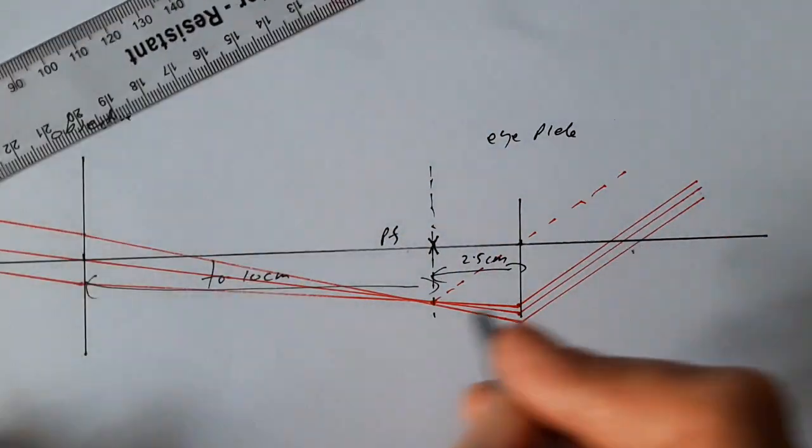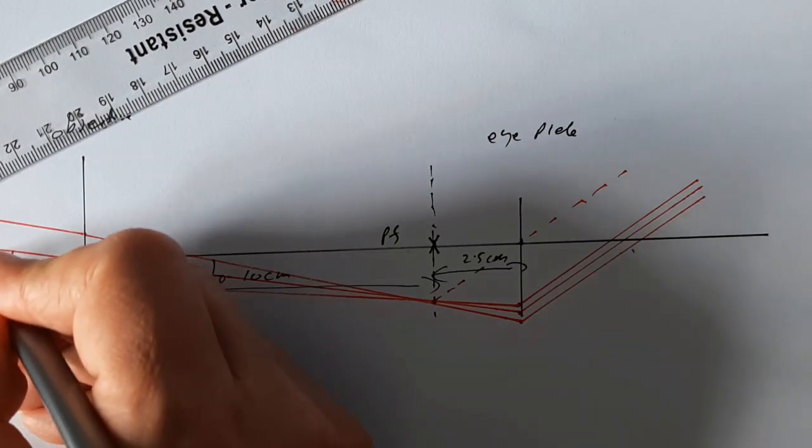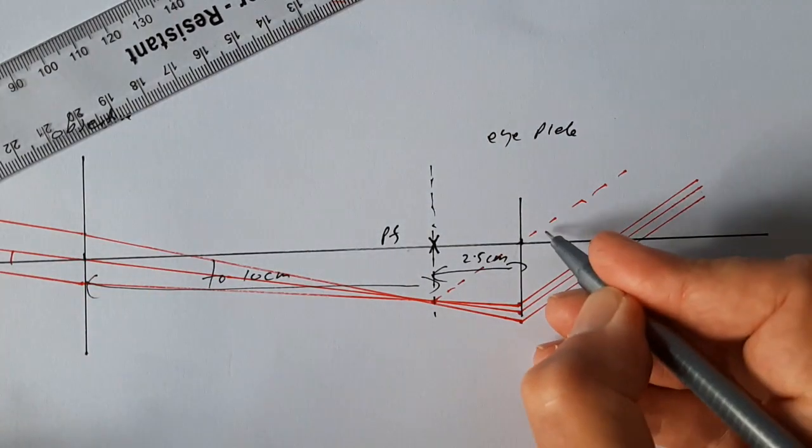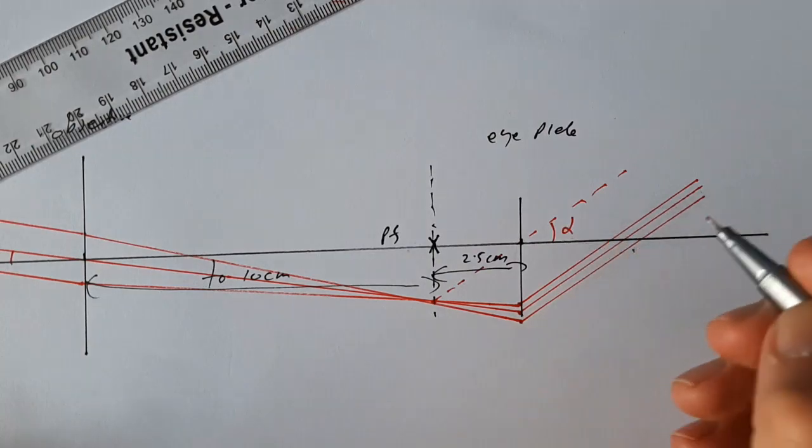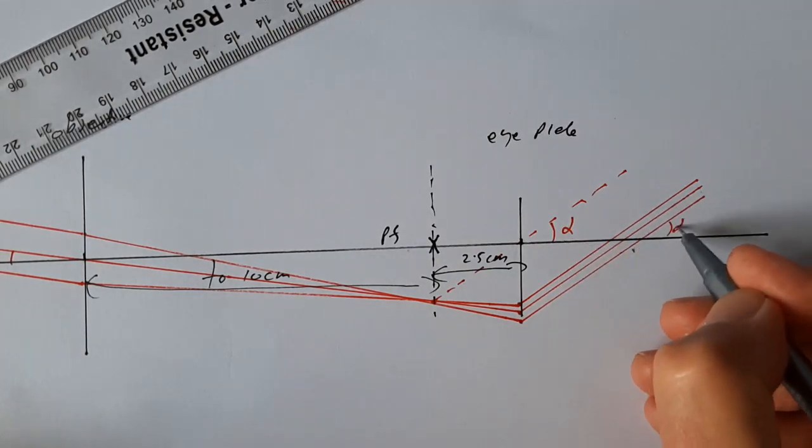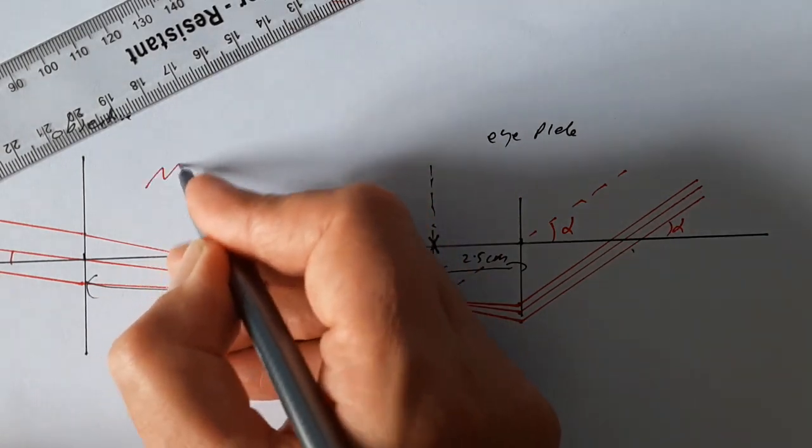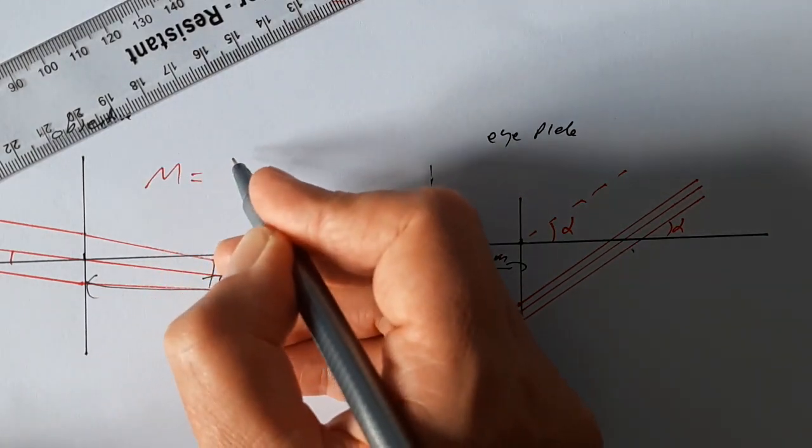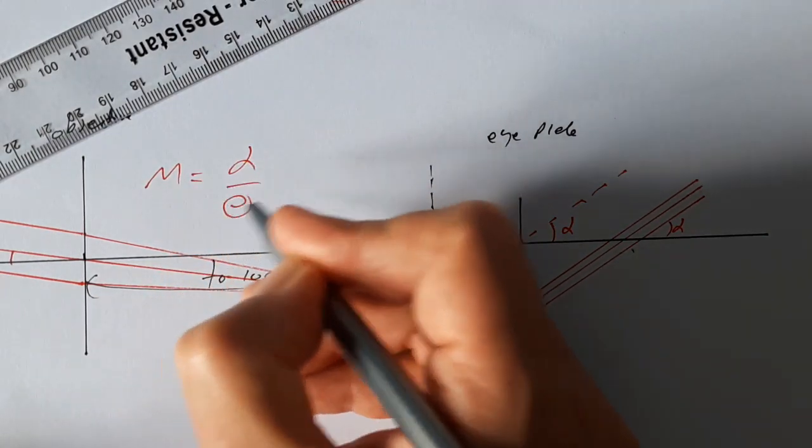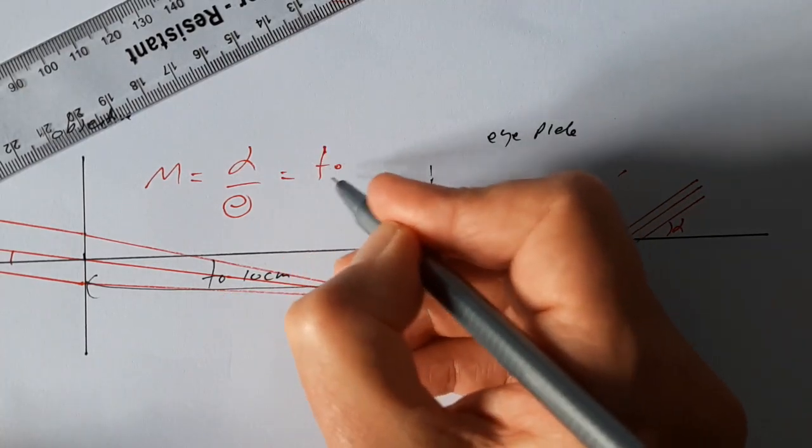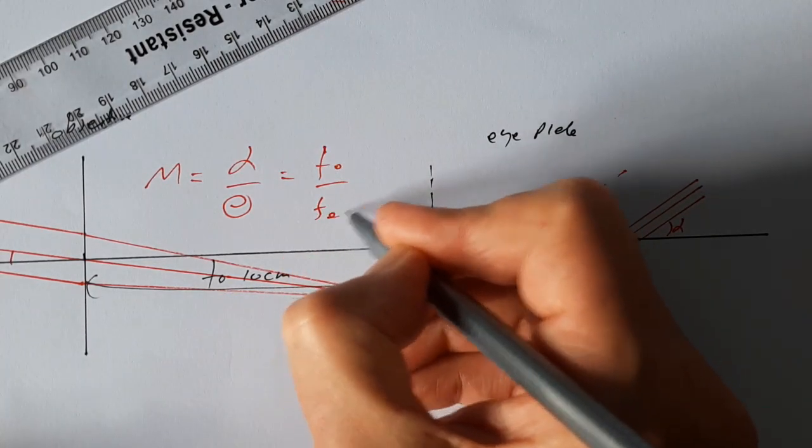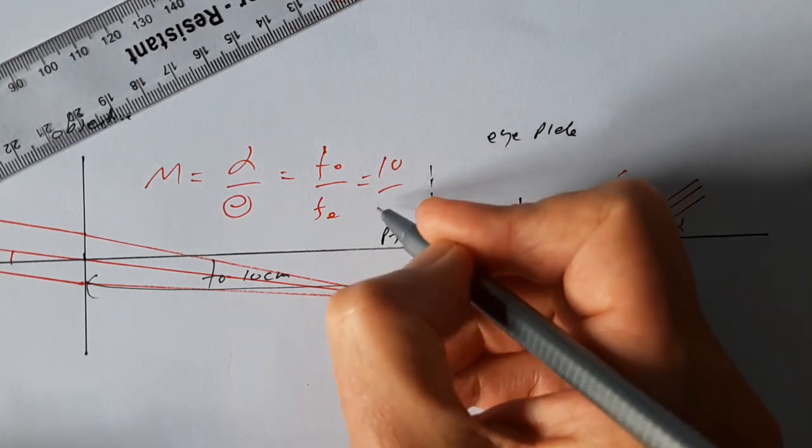What we can see is that this angle here is smaller than this angle here, because the magnification is how many times bigger that angle is than that angle. So magnification equals α over θ, which is the same as fo over fe, the focal length of the objective over the focal length of the eyepiece, which in this case is 10 over 2.5, which should give a magnification of times four.